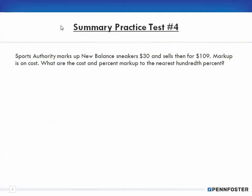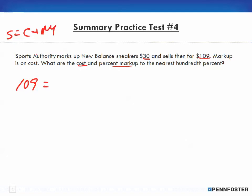Number four: Sports Authority marks up New Balance sneakers $30 and sells them for $109. The markup is on cost. What are the cost and percent markup? We know the markup is $30 and the selling price is $109. Selling price equals cost plus markup.